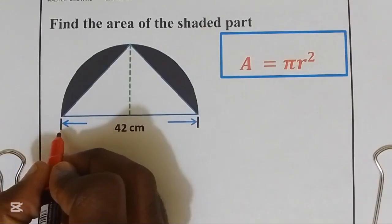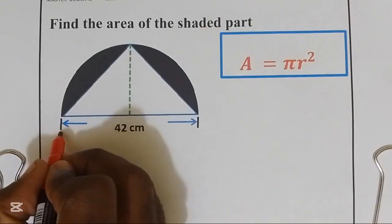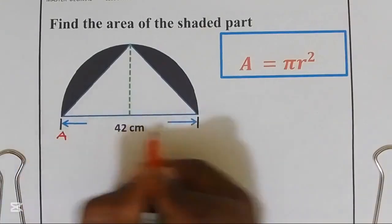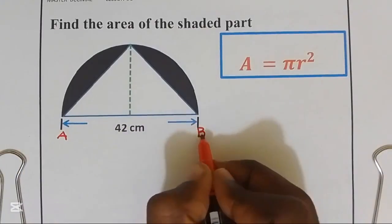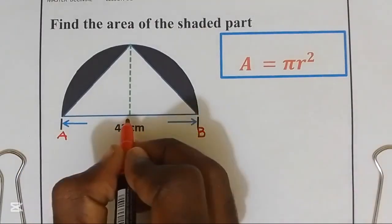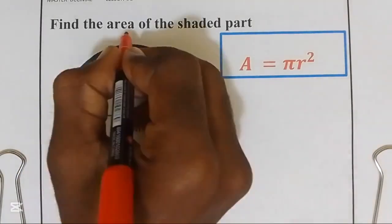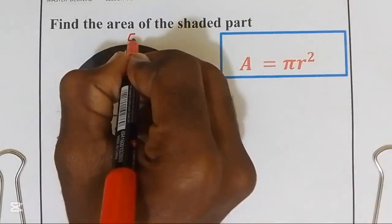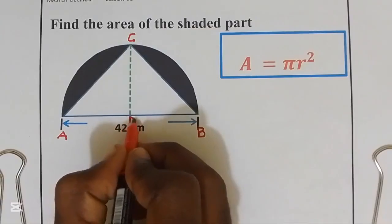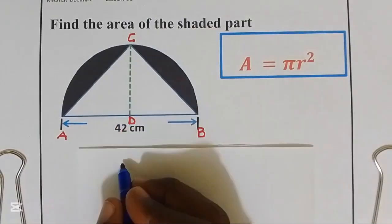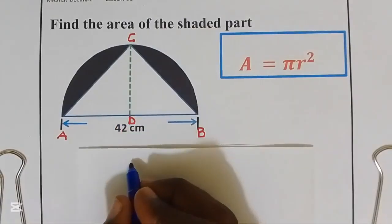Let us call this point as point A, this is point B, I'll call this as point C. First, we are going to find the area of a semicircle.